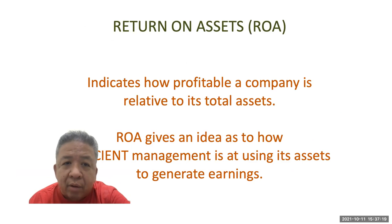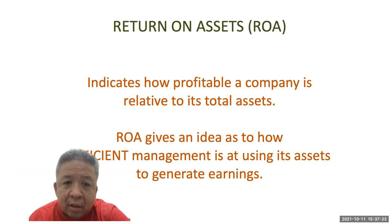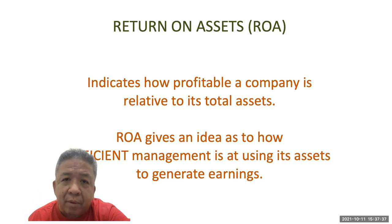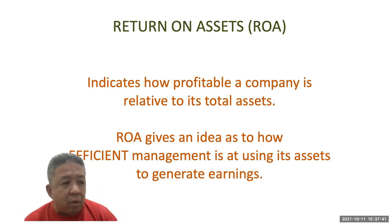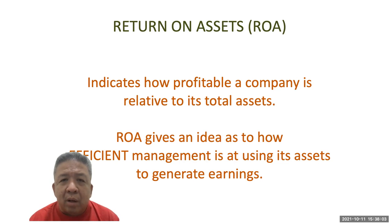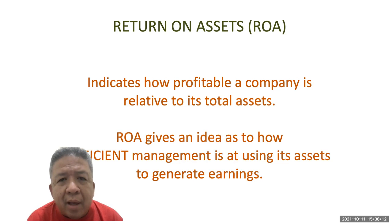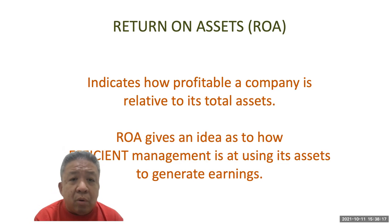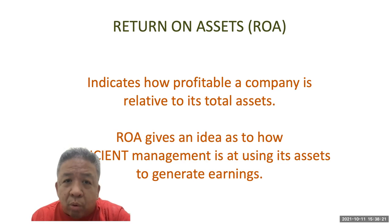Return on Assets, or ROA, indicates how profitable a company is relative to its total assets. ROA gives an idea of how efficient management is at using its assets to generate earnings. There's no mandatory standard, but if you look at Warren Buffett, banks should be able to return about 1.5% of their assets. It depends on other things as well — reserve requirements, non-performing loans, and requirements from Bangko Sentral ng Pilipinas. Generally, the higher the ROA, the better, and I use 1.5% as my go-to minimum.